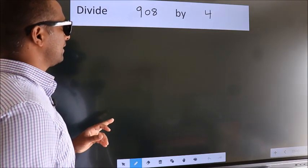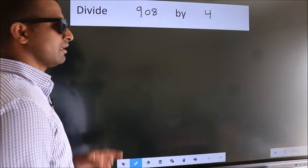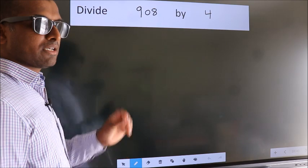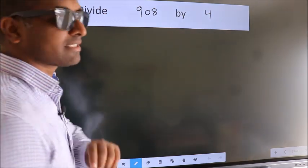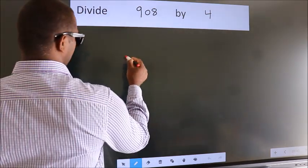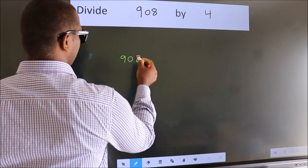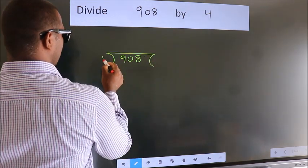Divide 908 by 4. To do this division, we should frame it in this way. 908 here, 4 here.